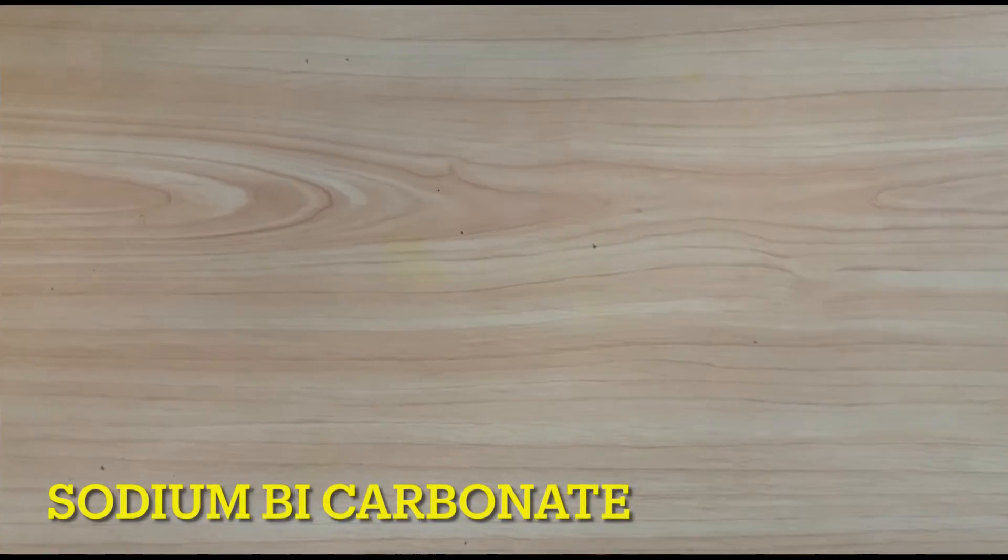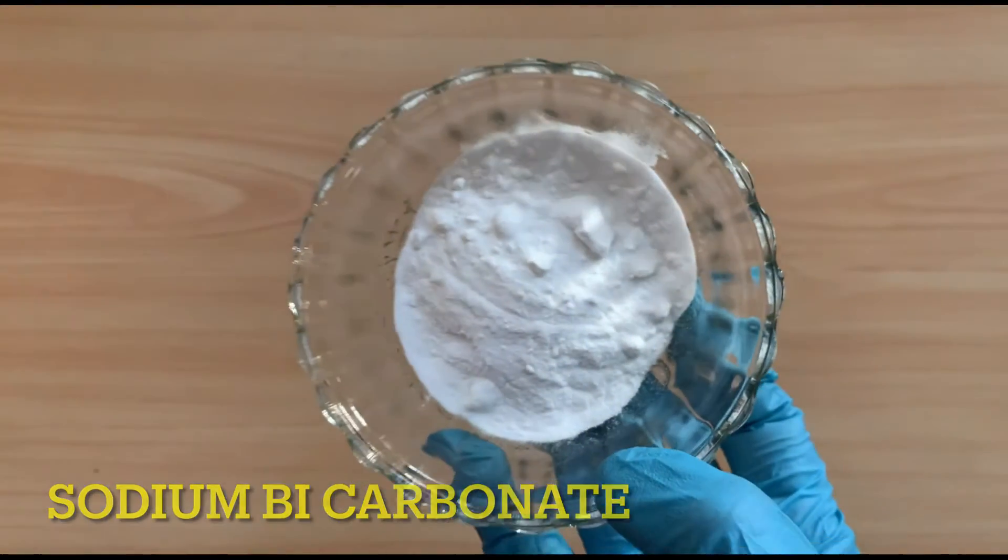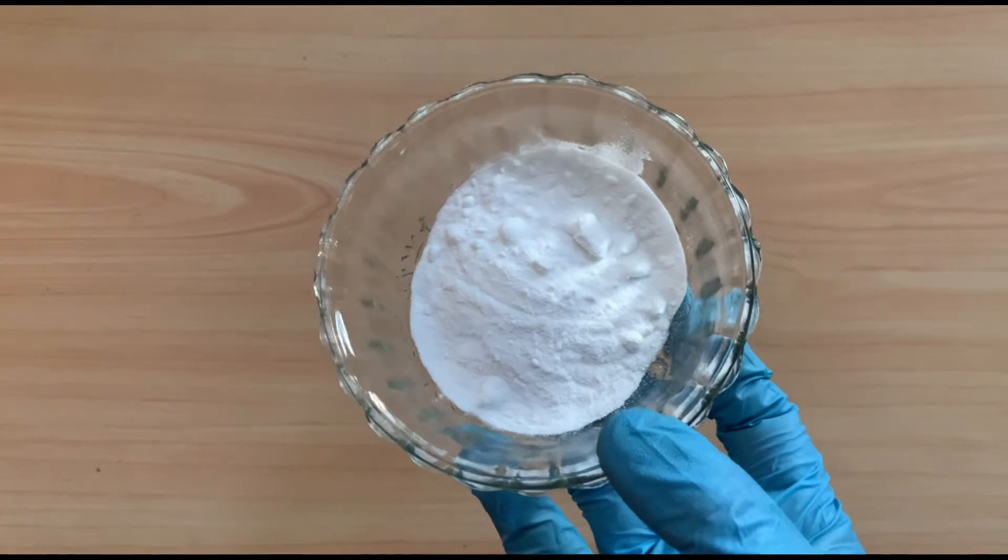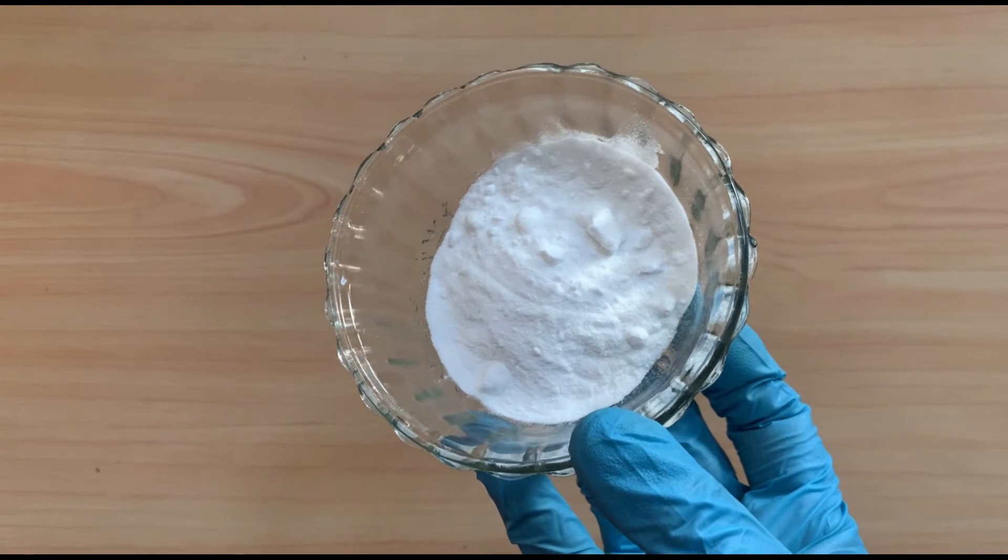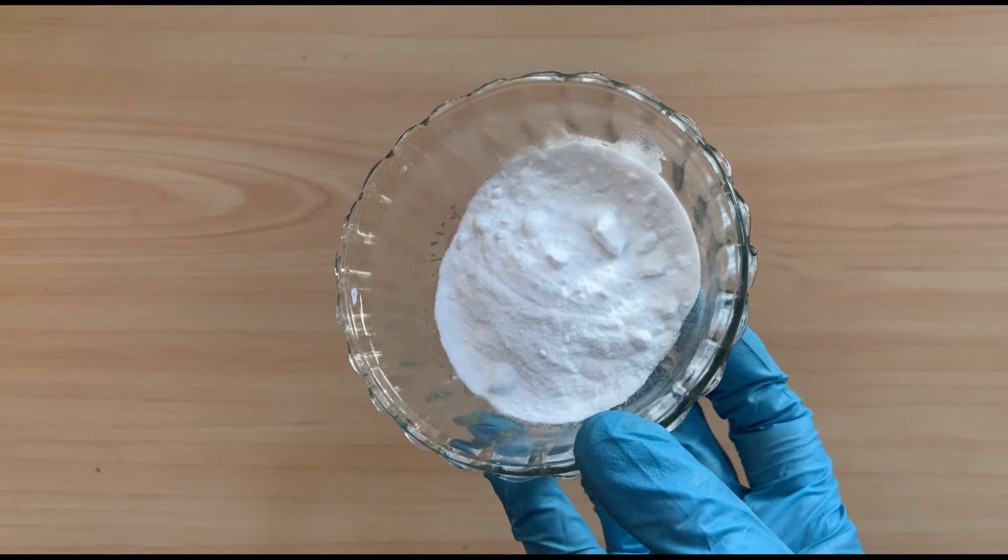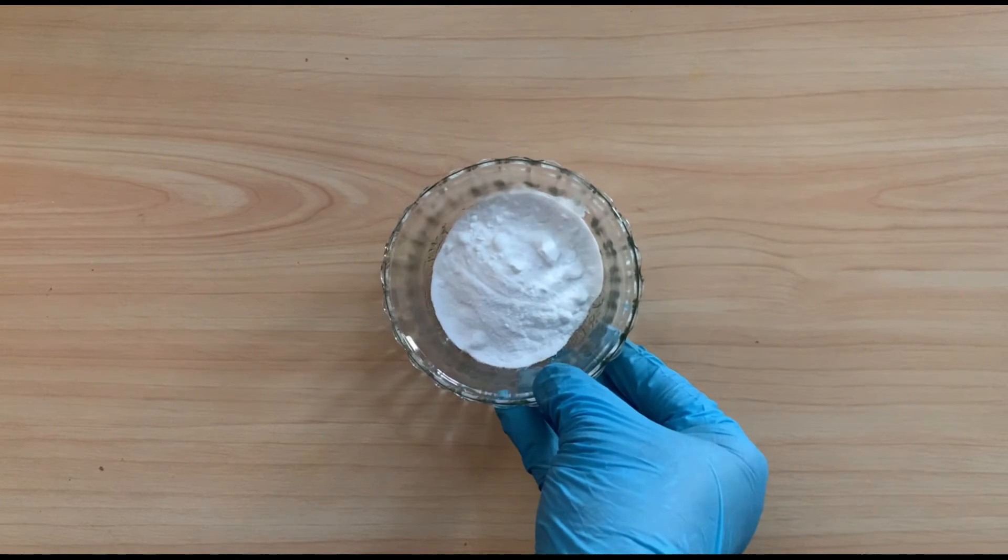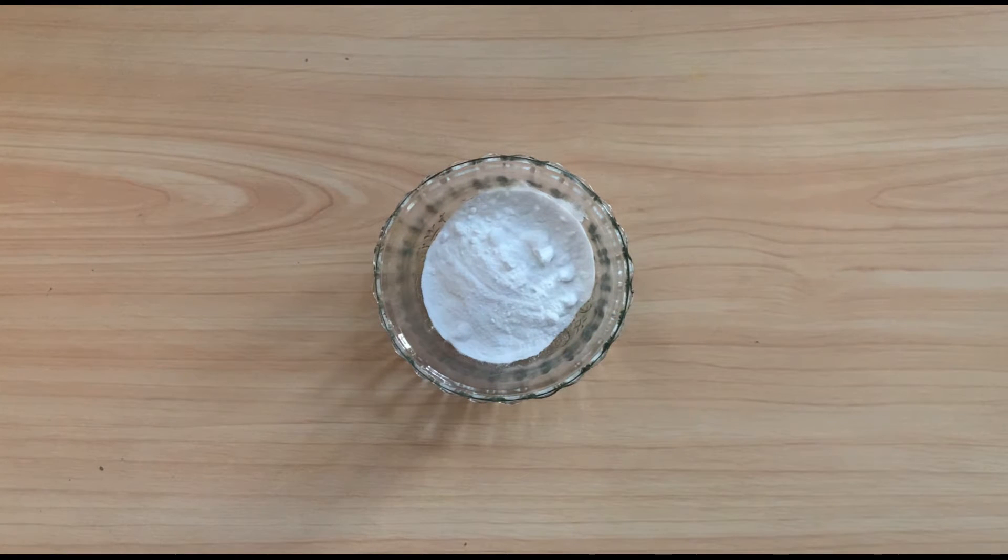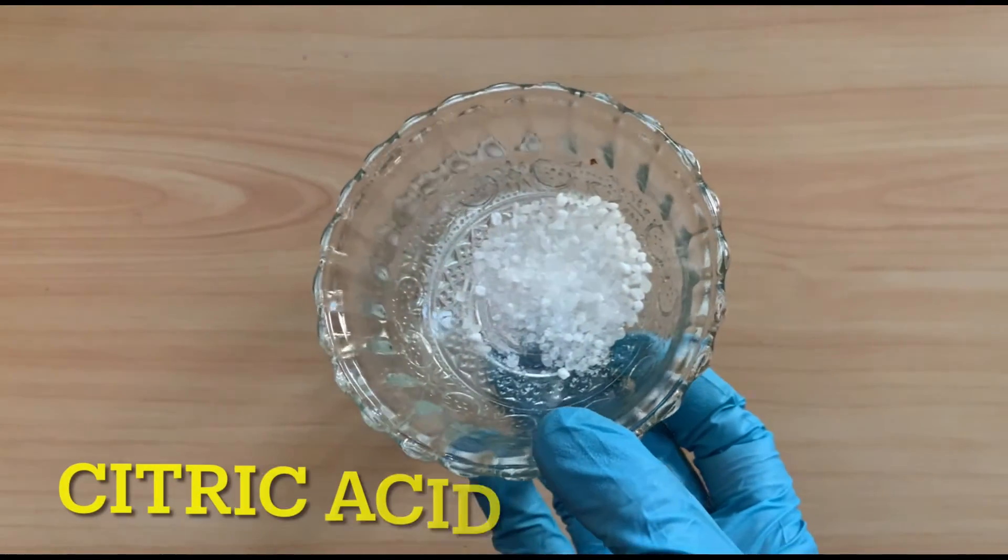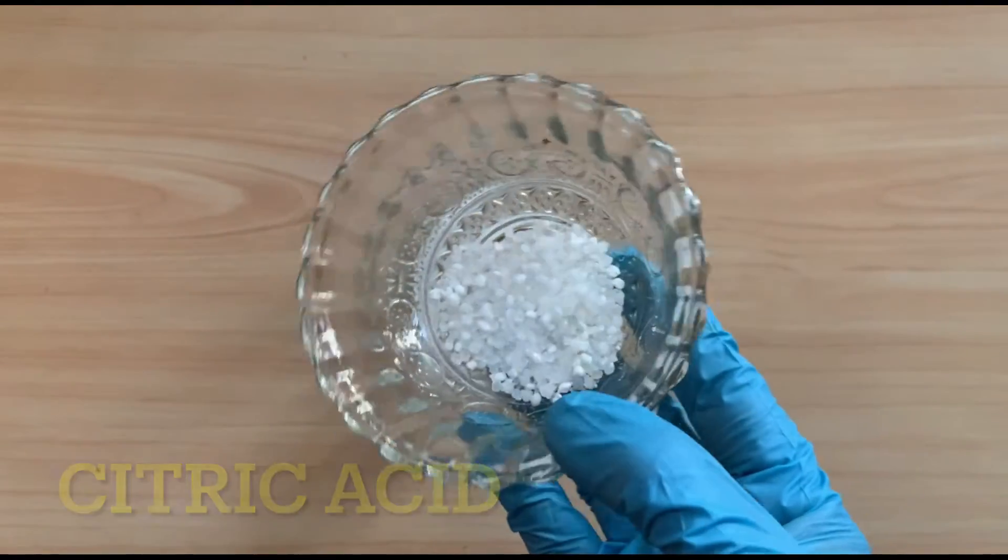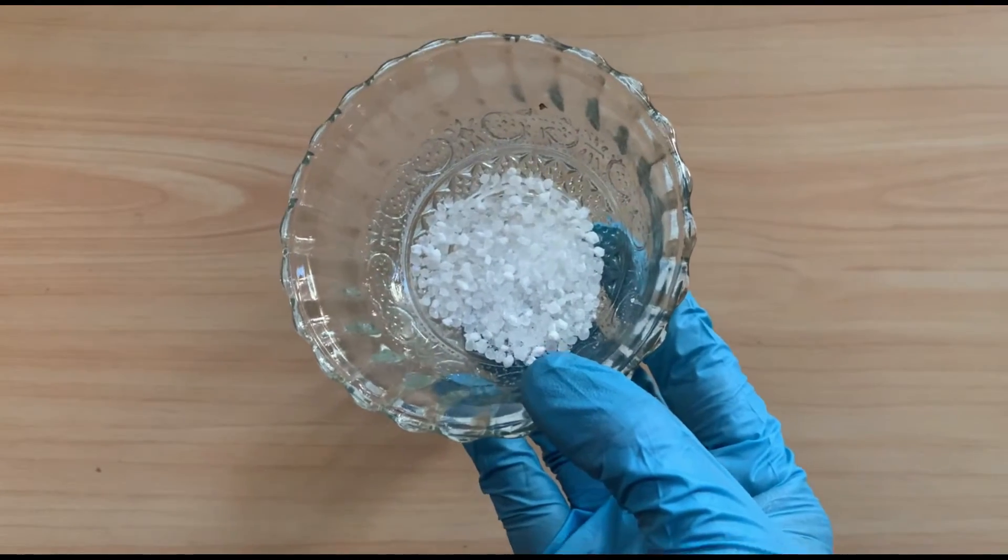Friends, first I am showing you the raw materials. See, this is baking soda. It is also called sodium bicarbonate. You can get it easily in any grocery shop. This is citric acid. It is sour in taste and easily available in the grocery shop.